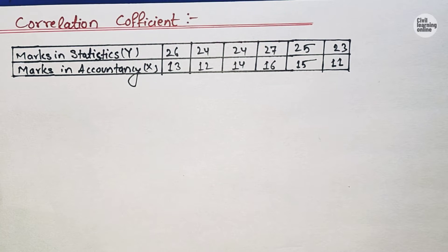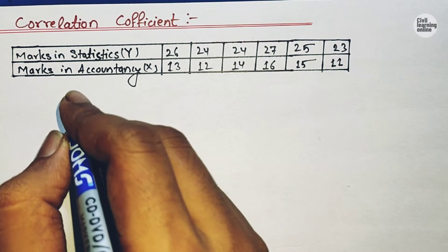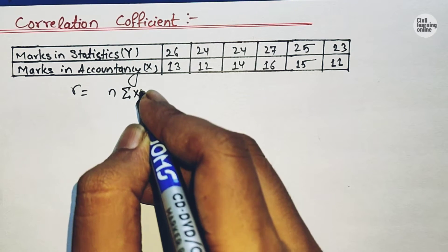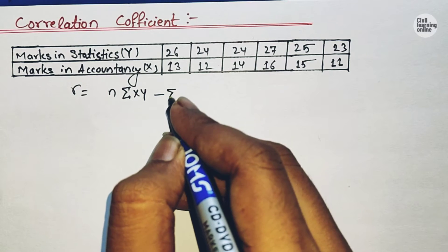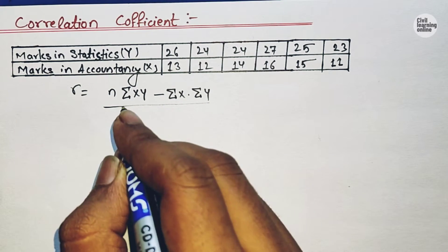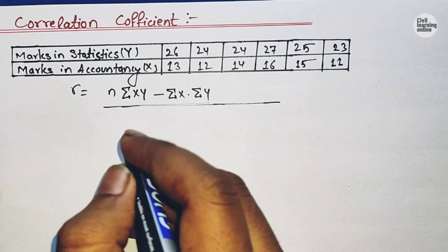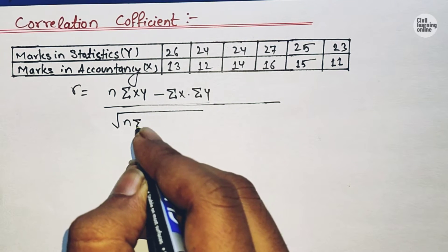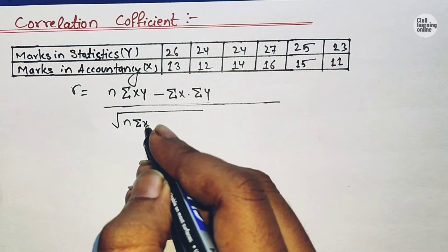While solving the numerical based on the correlation coefficient, let me first make you familiar with the formula, and then we will solve this numerical. The correlation coefficient is denoted by R, and its formula is: R equals n times summation XY, minus summation X multiplied by summation Y, all divided by the square root of n times summation X square minus summation X whole square.